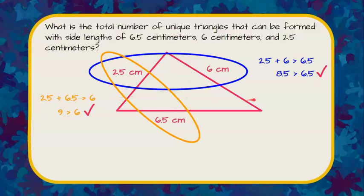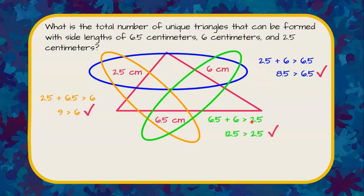All right one more pair to check, we need to add 6 plus 6.5 and it must be greater than the third which is 2.5 and we can tell 6.5 plus 6 is 12.5 and that is greater than the third side 2.5. So it checks.